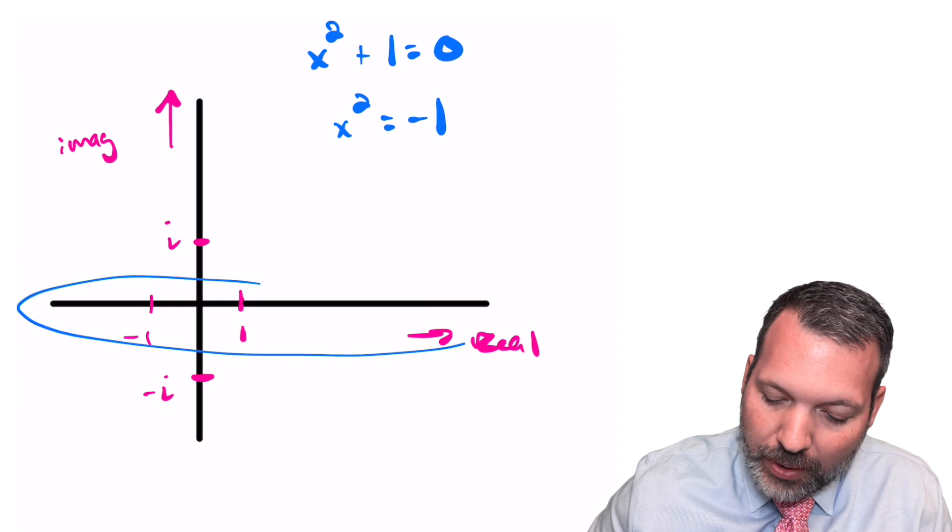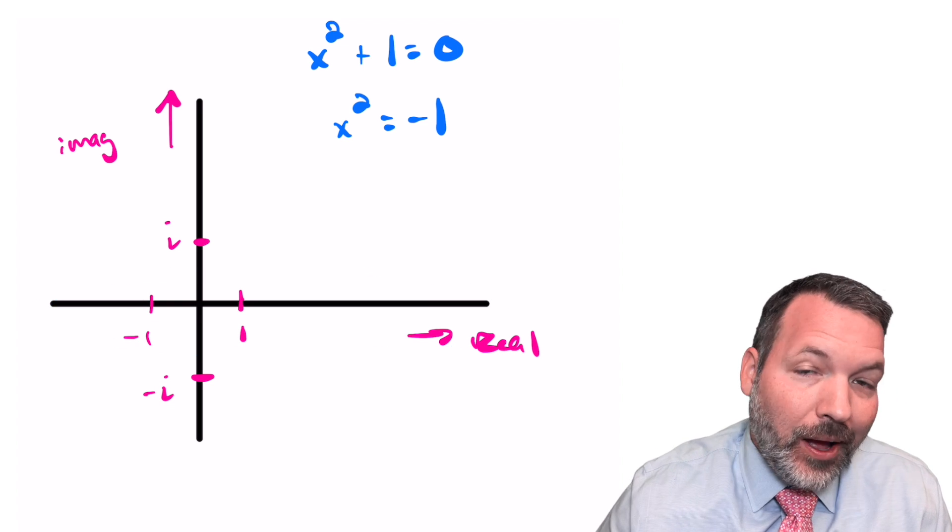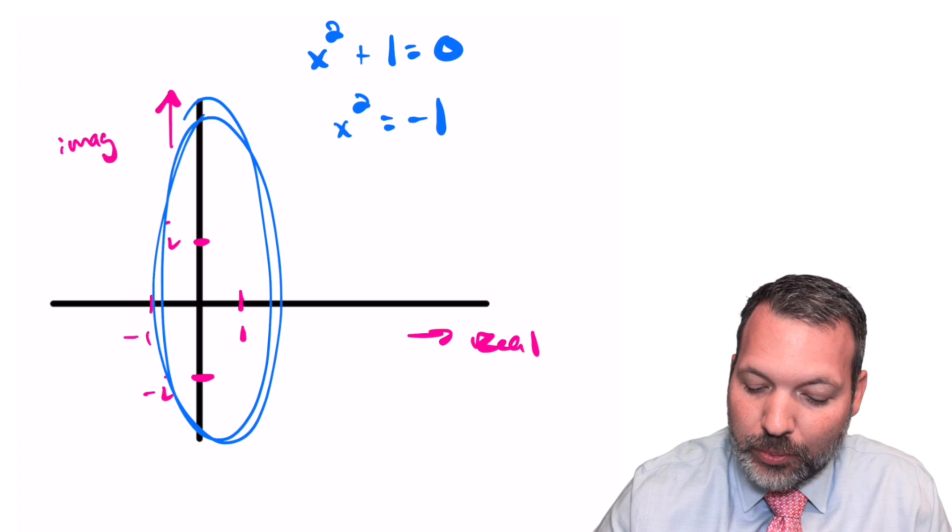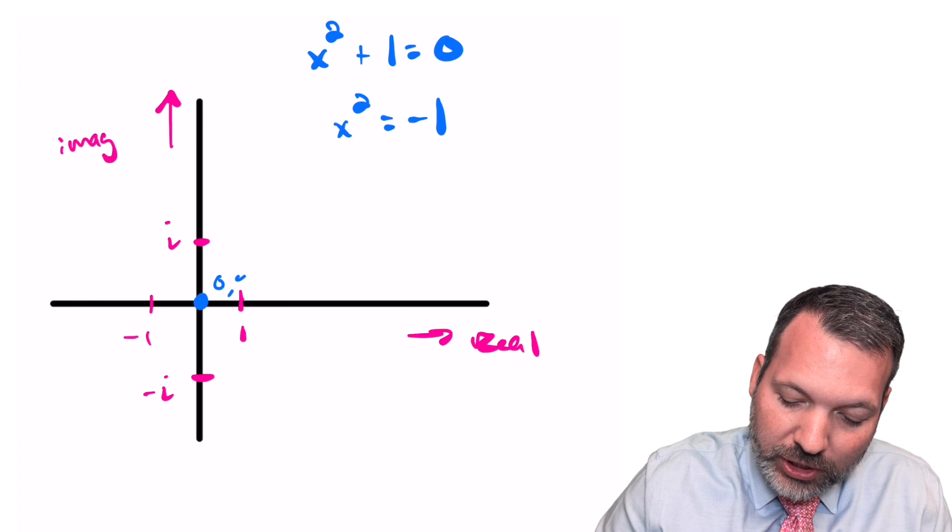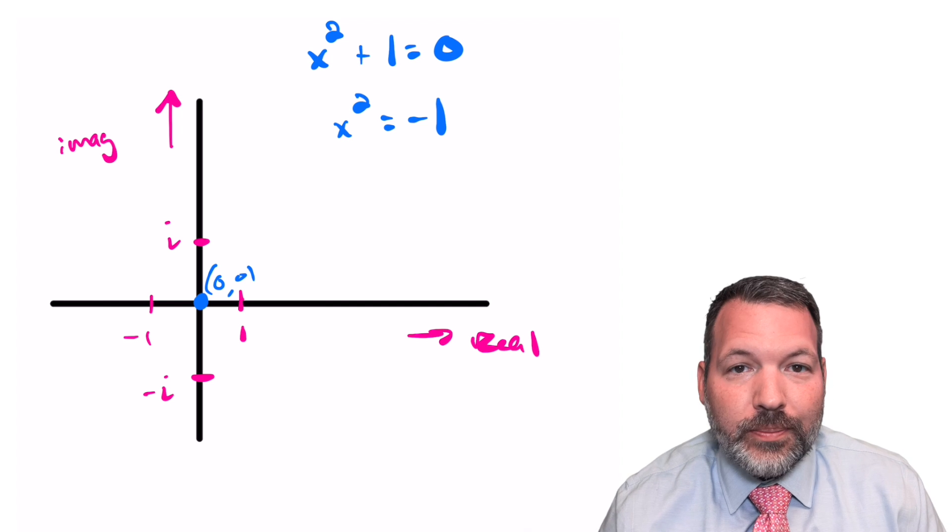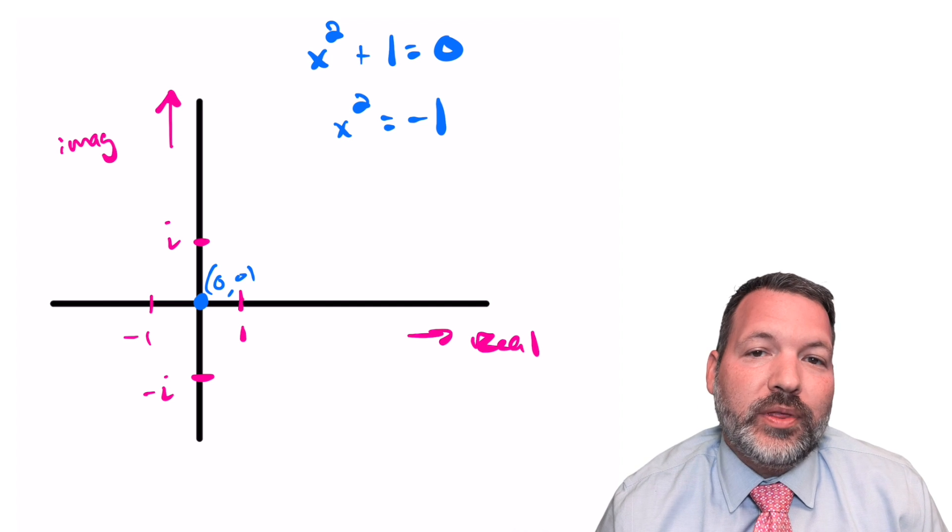If we think of our basic real number line going left to right, our imaginary number line instead goes perpendicular to that number line, of course, beginning at the origin, zero comma zero. And with that kind of number, we can raise something to a second power and end up with a negative result.